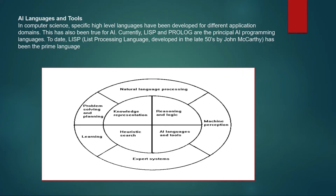The fourth element of the inner ring is AI languages and tools. In computer science, specific high-level languages have been developed for different application domains, and this is also true for AI. Currently, LISP and PROLOG are the principal AI programming languages. LISP, the List Processing language, uses the linked list concept and was developed by John McCarthy in the late 1950s. It is the prime language for AI.